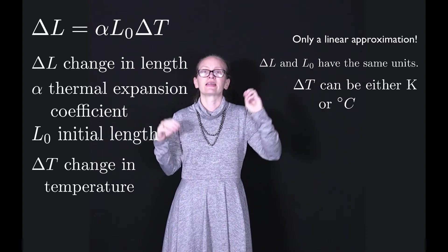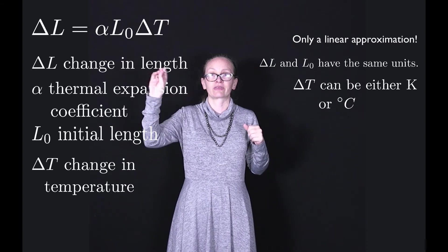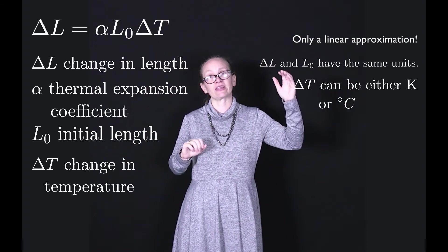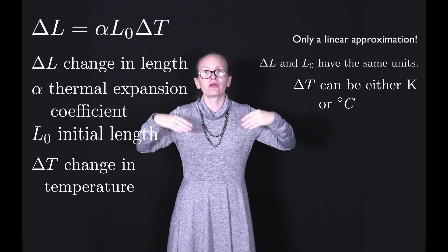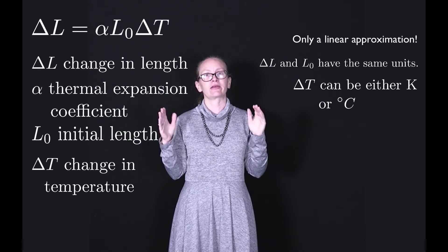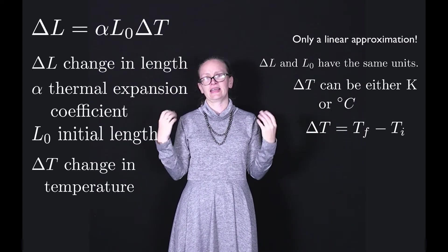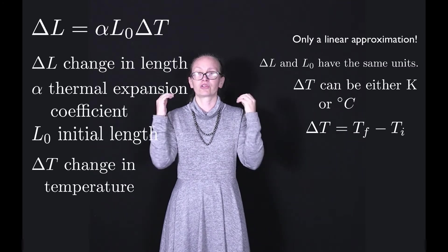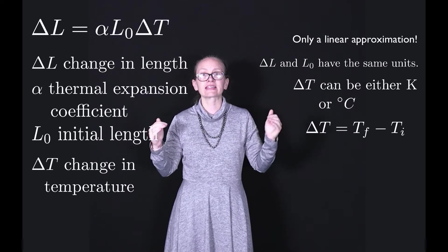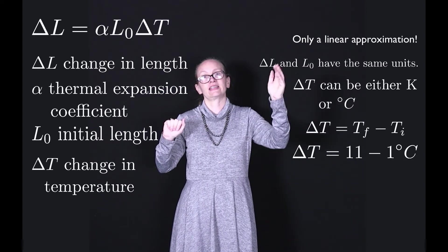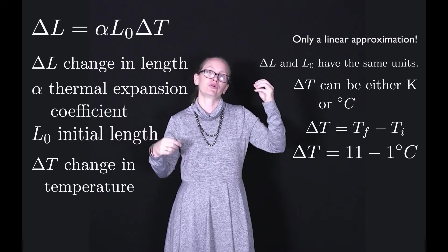ΔT is a change in temperature, so it can either be presented in degrees C or in Kelvins. These are actually the same for a change in temperature. The change in temperature is equal to the final temperature minus the initial temperature. Let's say the initial temperature was 1 degrees C and the final temperature was 11 degrees C. The change in temperature is 11 minus 1, which equals 10 degrees C.